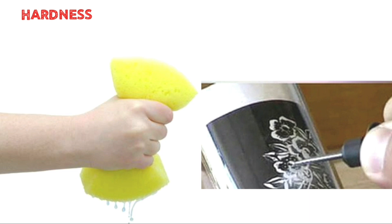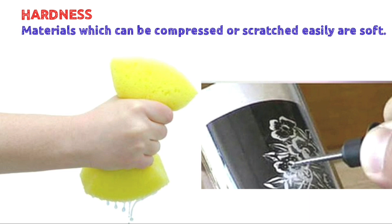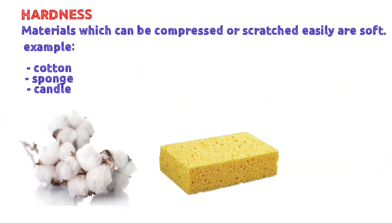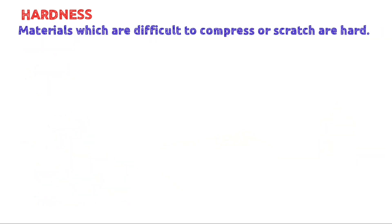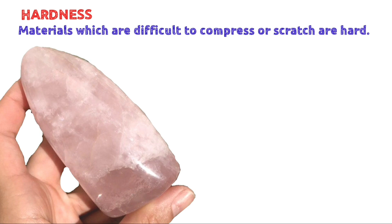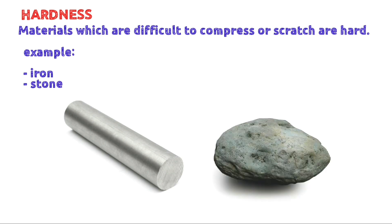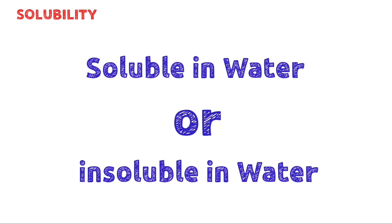The next property is hardness. Materials which can be compressed or split easily are soft — examples include cotton, sponge, and candle. Materials which are difficult to compress or scratch are hard — examples include iron and stone.